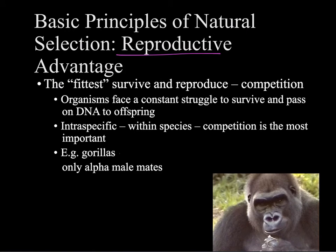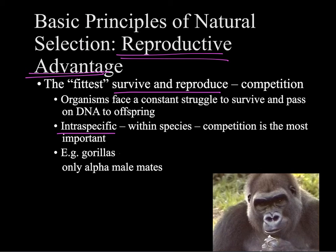The final principle of natural selection is reproductive advantage. This is where we get the idea of survive and reproduce. The fittest individuals will survive and reproduce. Fittest does not mean strongest — when you hear survival of the fittest, don't think necessarily the strongest, fastest, or smartest, but which individuals are more likely to live long enough to pass on their DNA to the next generation. The idea of intraspecific competition — competition amongst individuals within the same population — is very important here, competing for limited resources and mates. Gorillas are a great example: only the alpha male mates within a gorilla family, so the characteristics that allow that alpha male to survive and reproduce get passed on to his offspring.